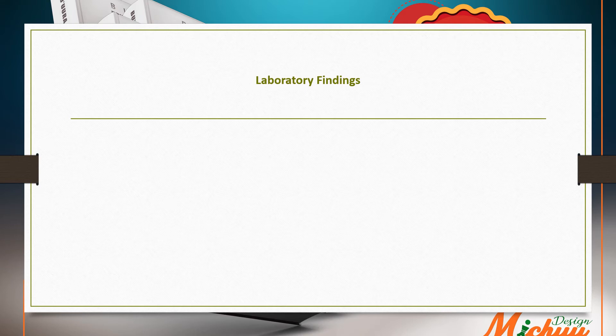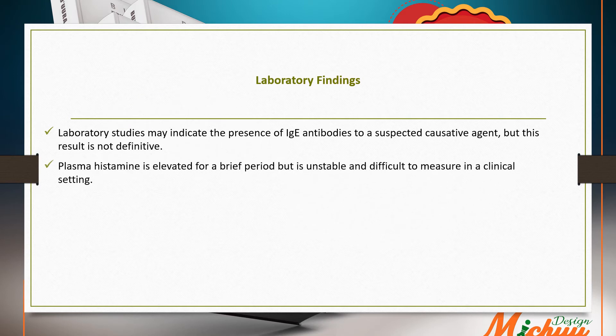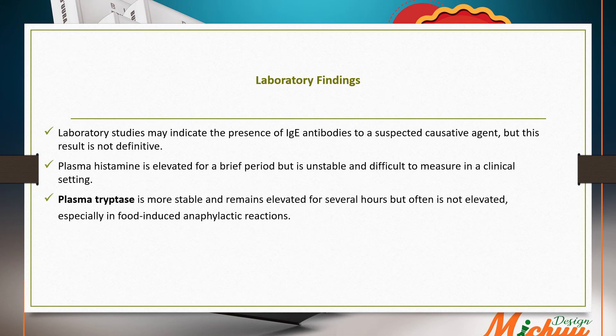Regarding laboratory findings, studies may indicate the presence of IgE antibodies to a suspected causative agent, but results are not definitive. Plasma histamine is elevated briefly but is unstable and difficult to measure clinically. Plasma tryptase is more stable and remains elevated for several hours, but is often not elevated specifically in food-induced anaphylaxis. Overall, there is no single definitive laboratory test to diagnose anaphylaxis.